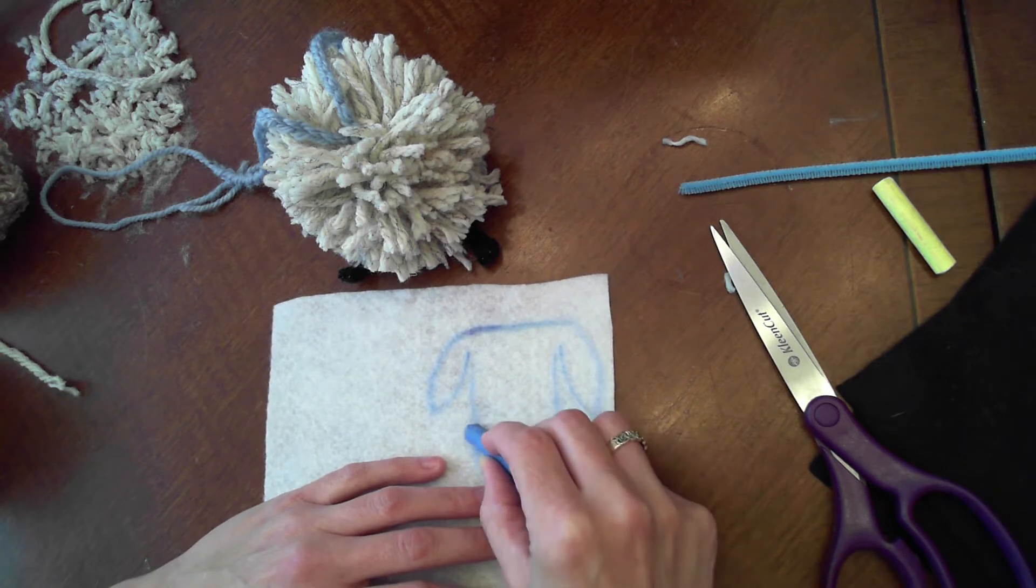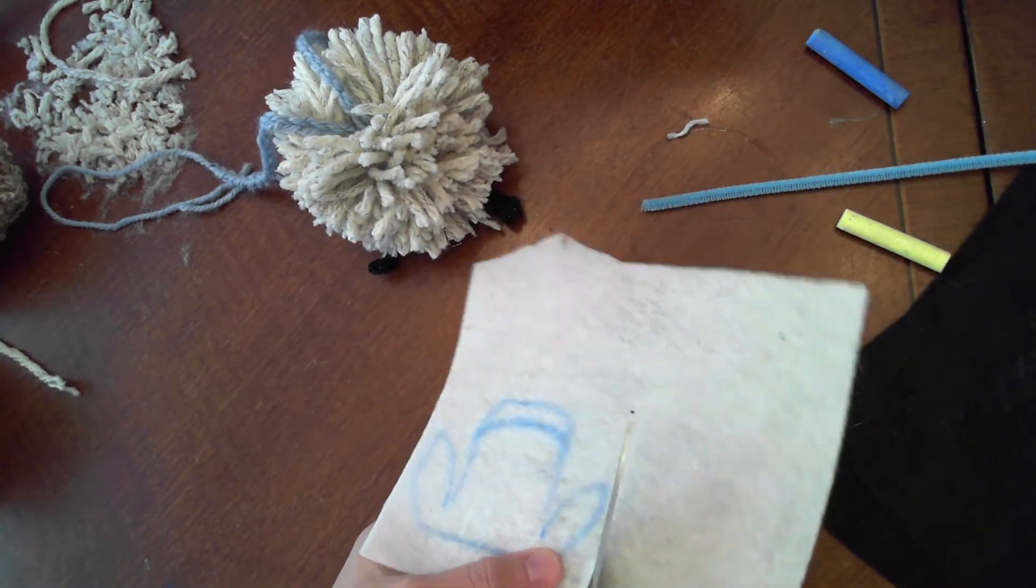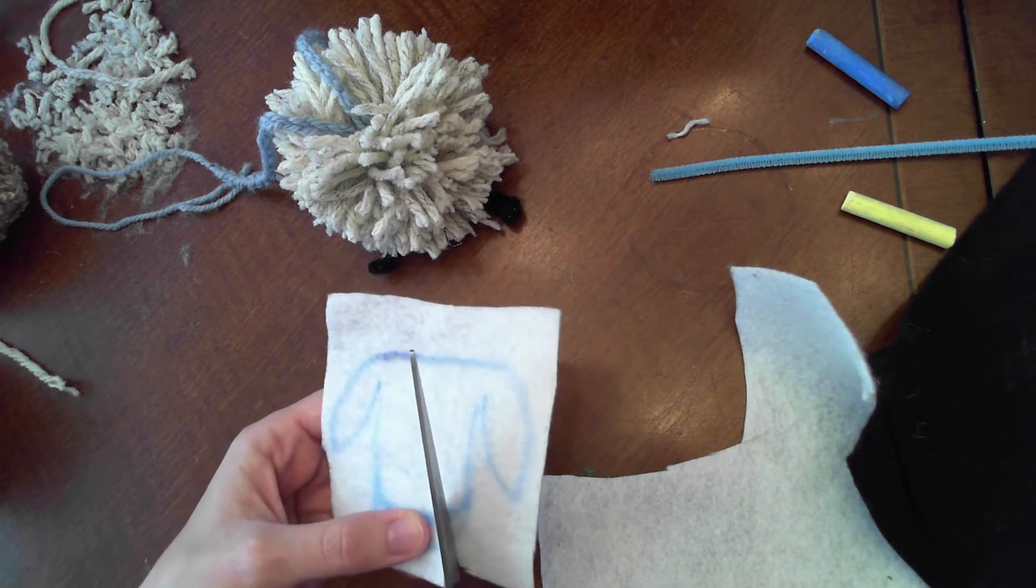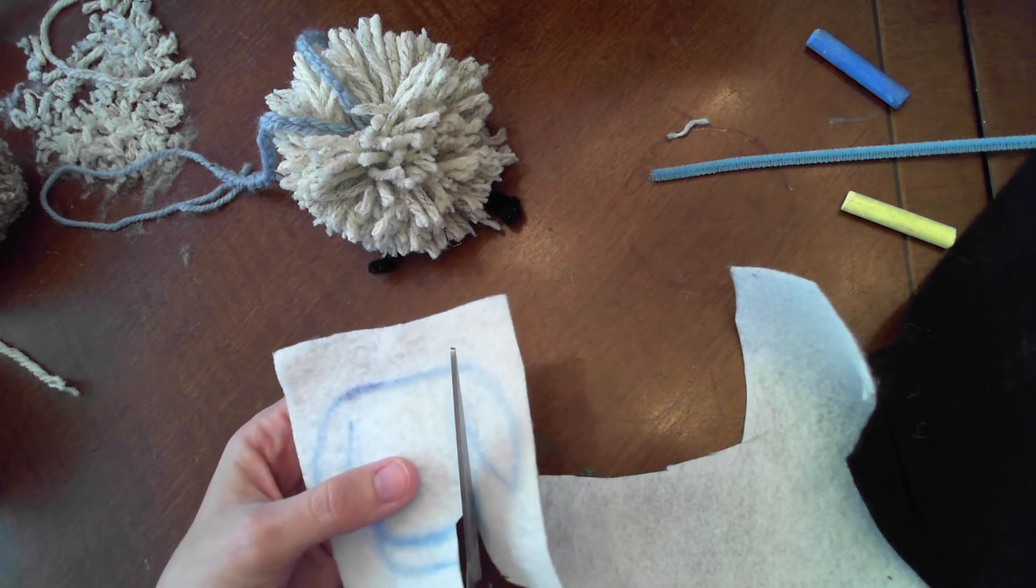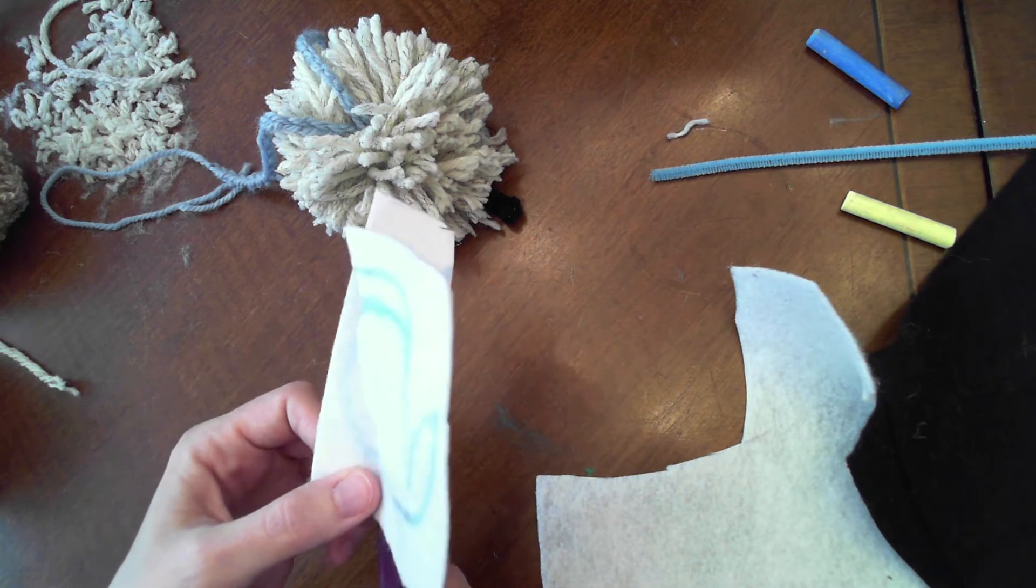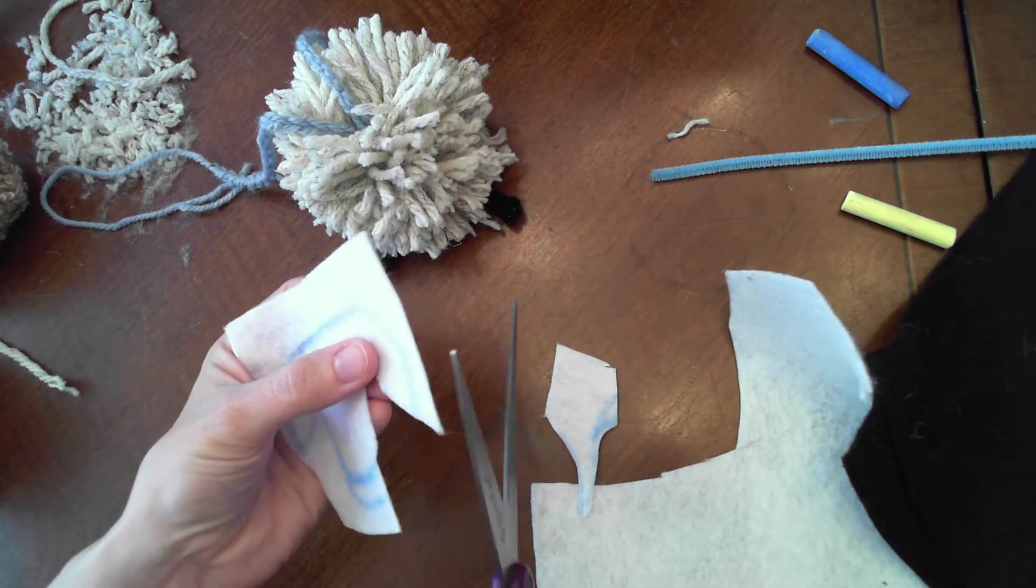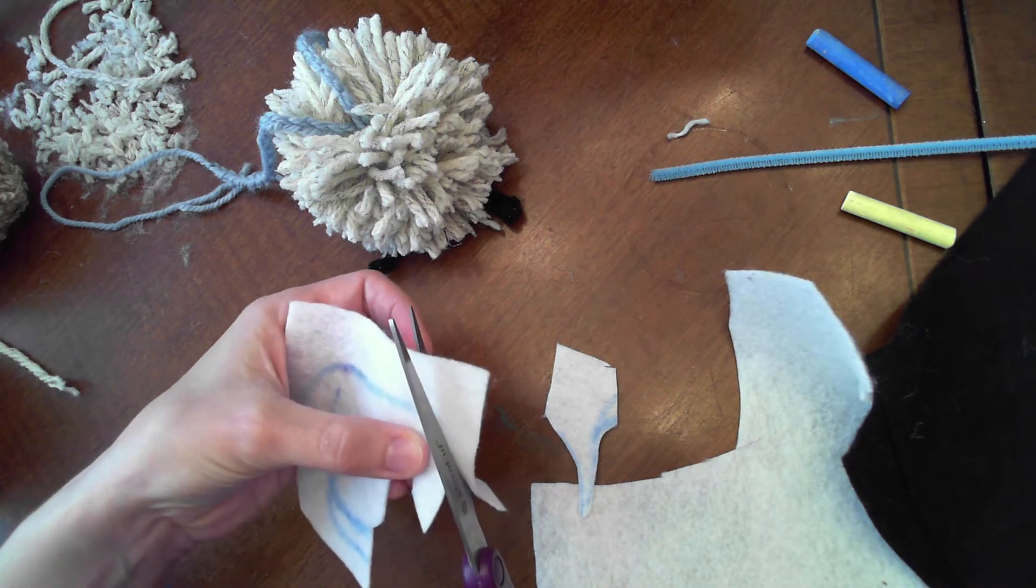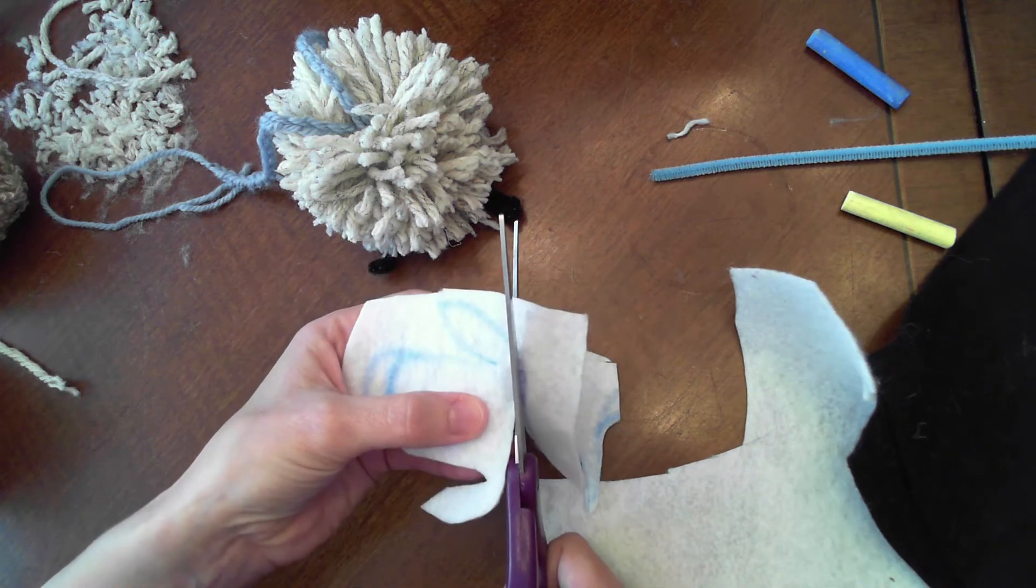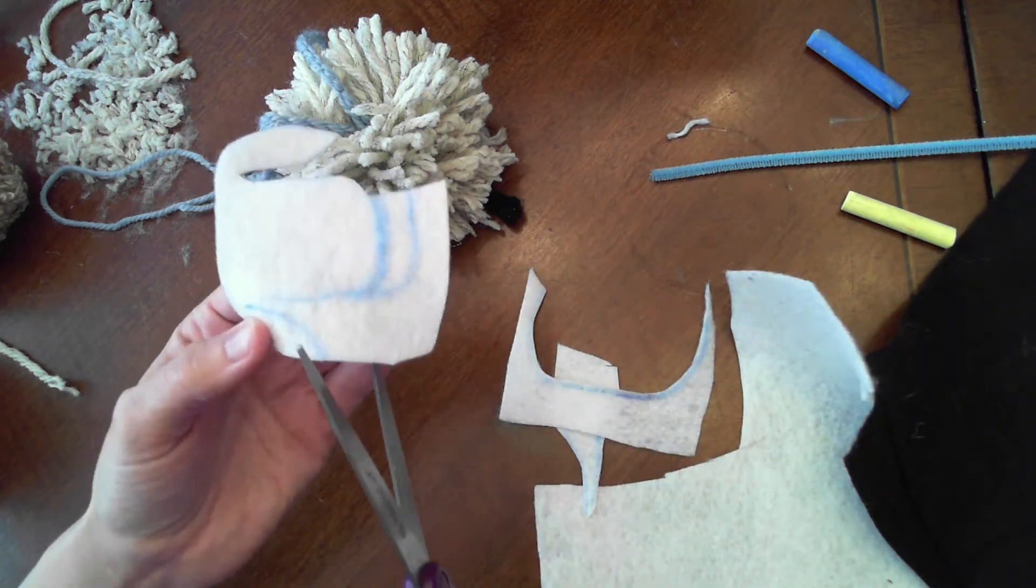When I cut out my face I am going to try to cut inside the line so that my chalk doesn't show up on my ram. Felt is not very forgiving so I am going to try to go slowly. At this point if you're having trouble drawing your ram or need to pause the video to go print out and cut your templates please feel free to do so. You know I'm looking at what I've cut so far and that ear is looking a little pointy so I'll come back to that.